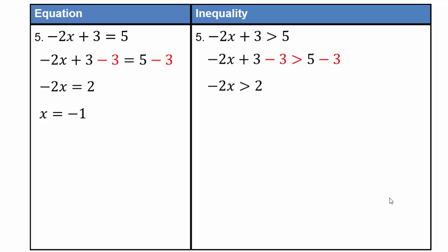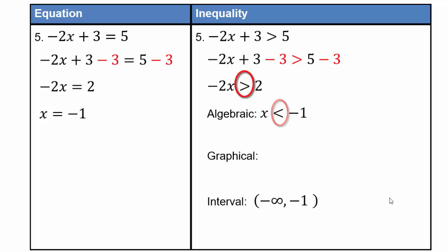Here we have negative 2x is greater than 2, but if we divide by negative 2, we're going to have to change the inequality from greater than to less than. Because we are dividing by negative 2, we change the greater than to less than. Graphically: a number line with a punched hole at negative 1 and everything under shaded. Interval notation is negative infinity to negative 1 with open brackets — parentheses — meaning not included.